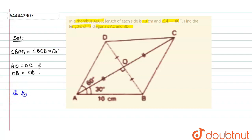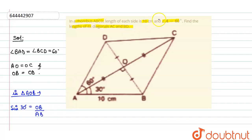In triangle AOB, the angle is 90 degrees, so AB is the hypotenuse. Taking sine 30 degrees, which equals the opposite side upon the hypotenuse — that is OB upon AB. The value of AB is 10 centimeters as given in the question.